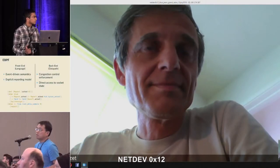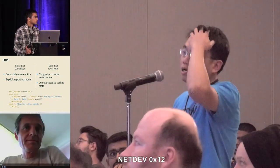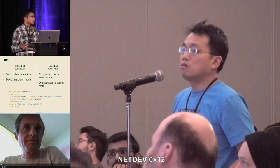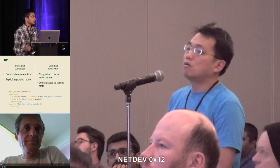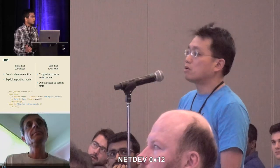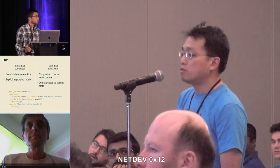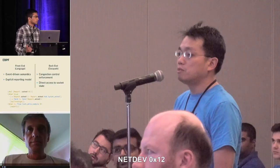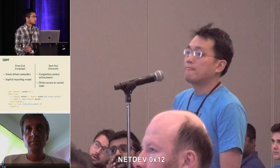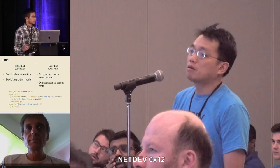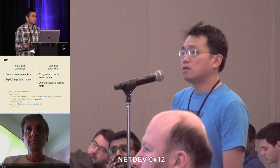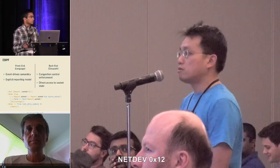Question: How frequent is the communication between the data plane and control plane — is it triggered on every ack? Answer: This is configurable and depends on the congestion control algorithm implementation. Question: Can your implementation run on a 40G NIC? Answer: The fastest we've tested is 10G — we don't have access to a 40G NIC. At 10G we can saturate the link.